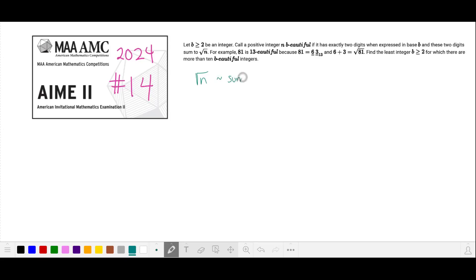Since the square root of n is the sum of two digits, root n is an integer, so n is a perfect square. Let's call n equals a squared, where a squared is n beautiful.